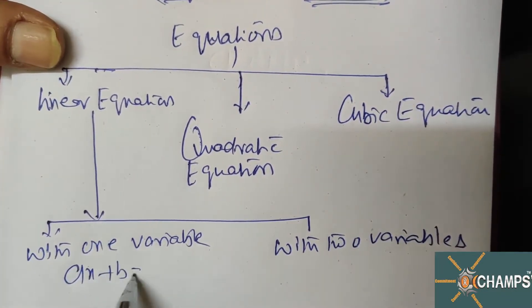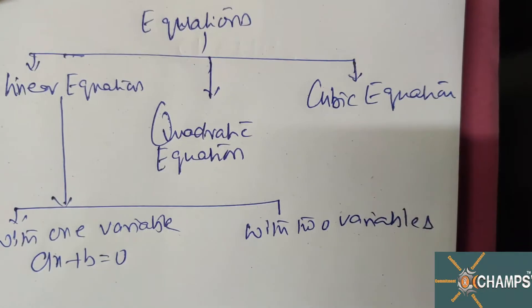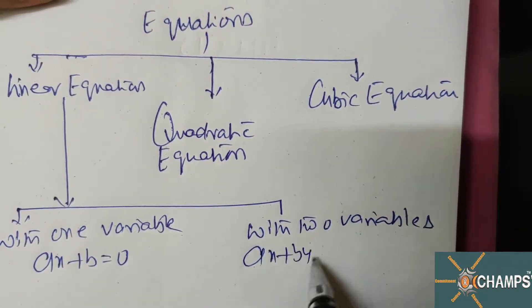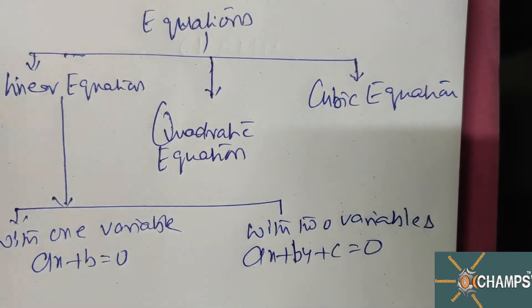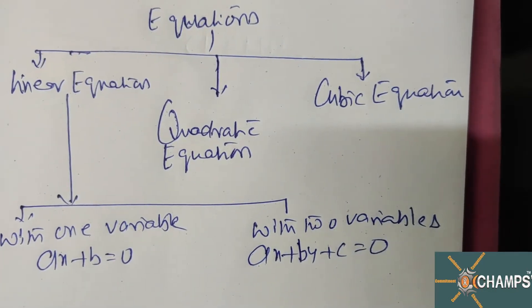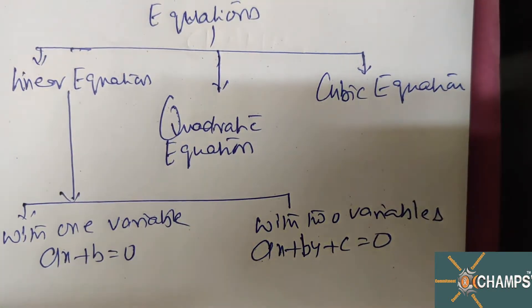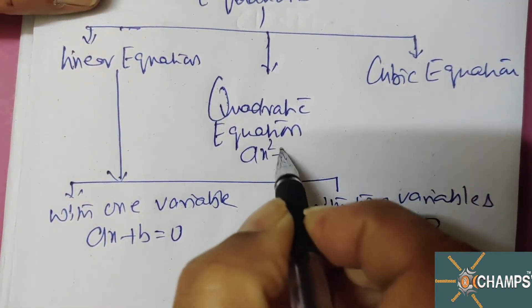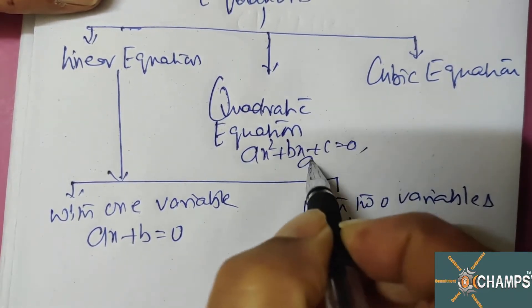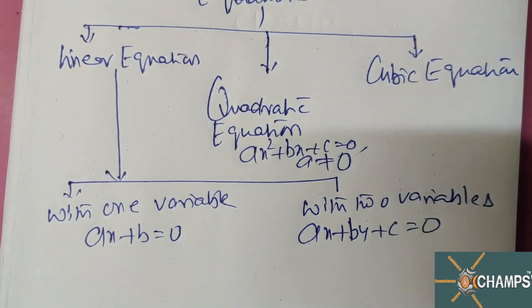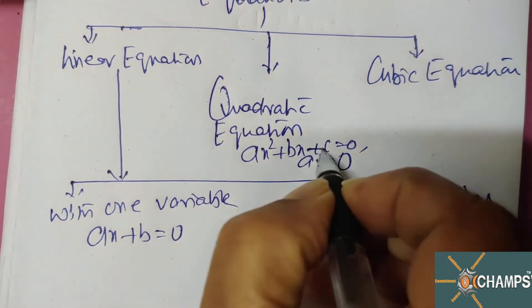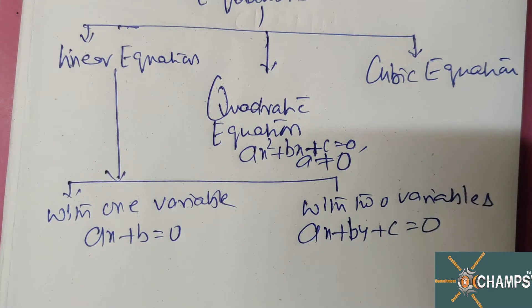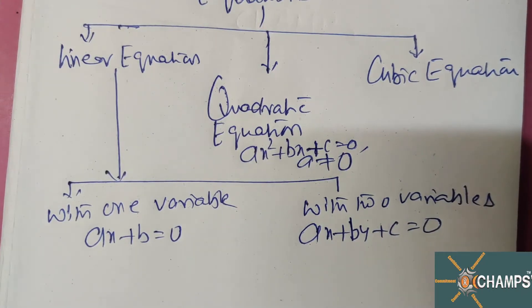Example of one variable: ax plus b equal to zero. Two variables: ax plus by plus c equal to zero. Quadratic equation means ax square plus bx plus c equal to zero, where a is not equal to zero.